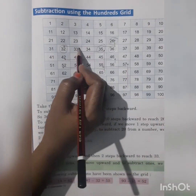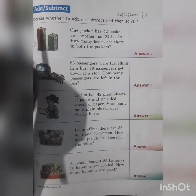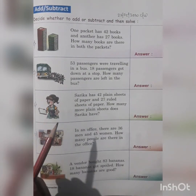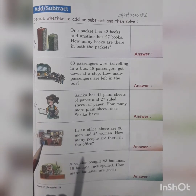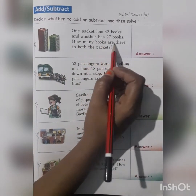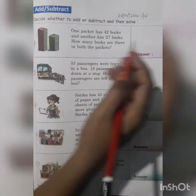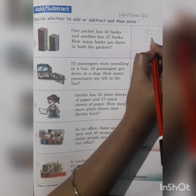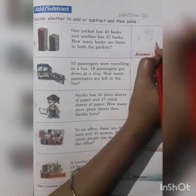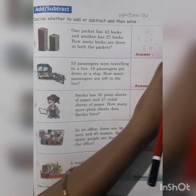For word problems, we read each problem and decide whether it is addition or subtraction. Problem 1: One packet has 42 books and another has 27 books. How many books are there in both packets? We need to add: 42 plus 27 equals 69 books.